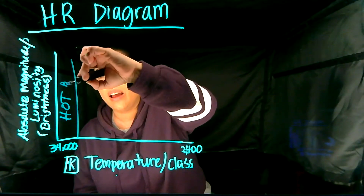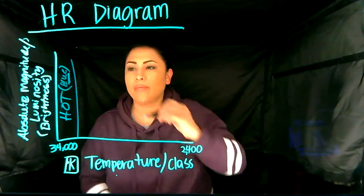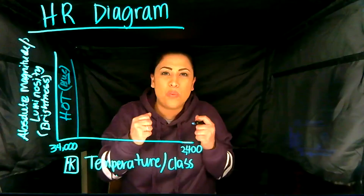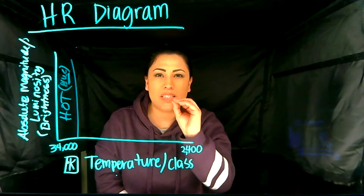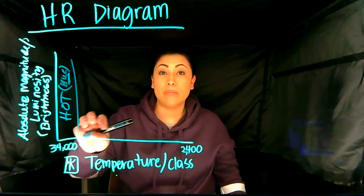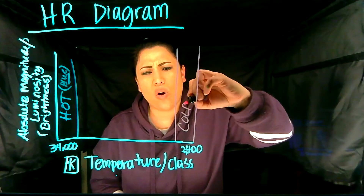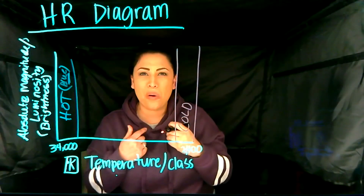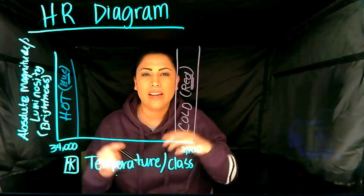We're going to label this — if you don't have a colored pencil or marker, just write 'blue' here — because over here the stars are the hottest. Now, it's a little opposite from what we'd think: when we think of hot we think of red, and cold we think of blue. But stars are the opposite. If you've ever looked at a flame, the hottest point right at the center is actually blue. So the hottest stars are going to be blue. Over here the coldest stars — and I'll draw a line — we say 'cold,' but 2,400 Kelvin is still really, really hot. These are going to be red.